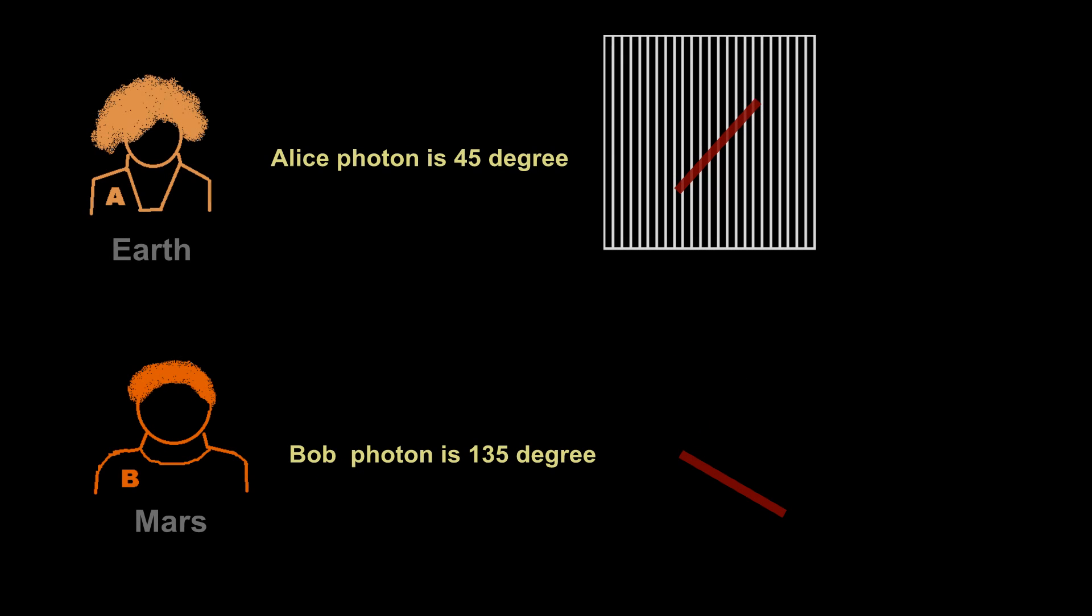Now Alice measure it by vertical filter. The angle between the filter and photon is 45 degree. What would be the result? We cannot tell exactly, right? Because this is pure probability. We have already seen that 45 degree with vertical filter has 50% chance to pass and 50% chance to get blocked. Assume it is passed. So now the photon at Alice's side has new polarization state of 0 degree. Previously it was 45. Now it is 0.